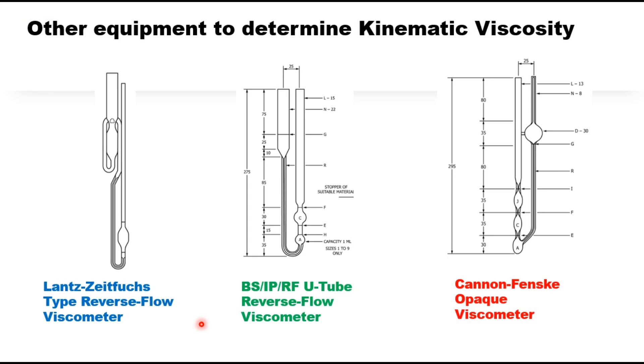There are other viscometers also to determine the kinematic viscosity. Lantz-Zeitfuchs type reverse flow viscometer or BSIP/RF U-tube reverse flow viscometer or Cannon-Fenske opaque viscometer but in all these tube viscometers the basic principle remains same that determine the time required by the bitumen to flow between two marks and this time is multiplied by the calibration factor for the tube to get the kinematic viscosity.